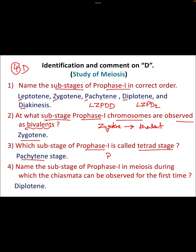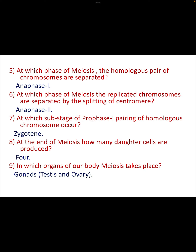Name the sub-stage of prophase 1 in meiosis during which chiasmata can be observed for the first time. That is in the diplotene stage. The characteristic feature of diplotene is the observation of chiasmata, where an exchange of genetic information happens in the chiasmata region.